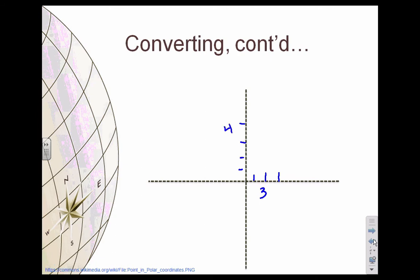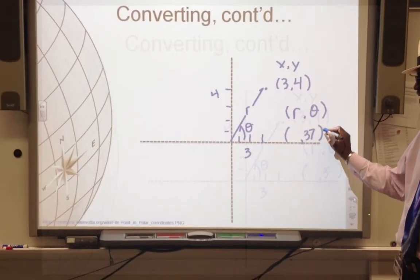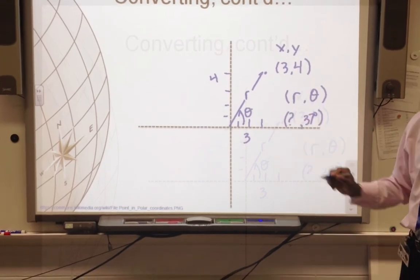There's my Cartesian coordinate pair. There's the r. There's the theta. I have an x and a y. I have an r and a theta. This is 37 degrees. I know you know what that is.